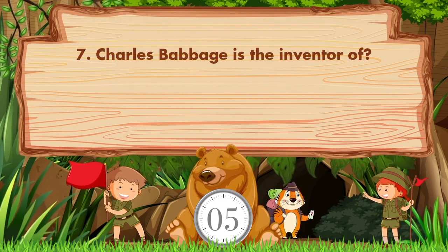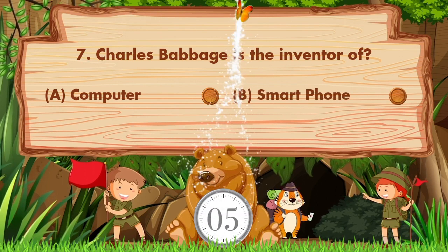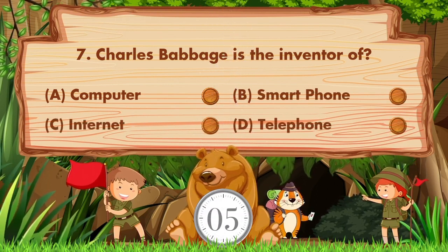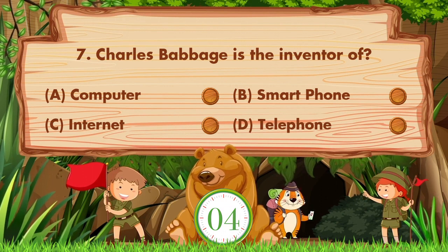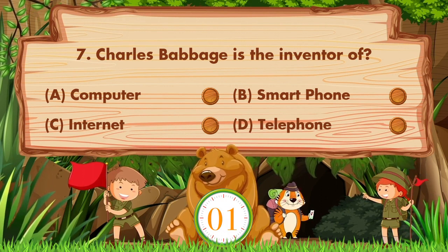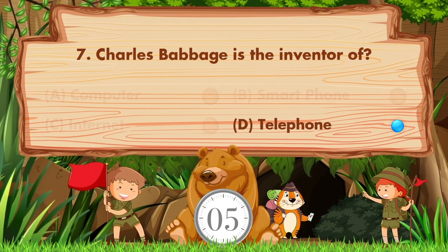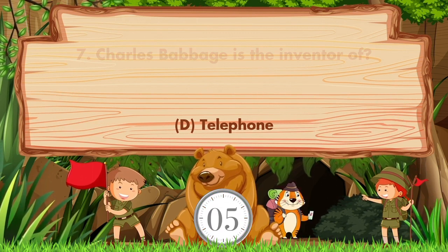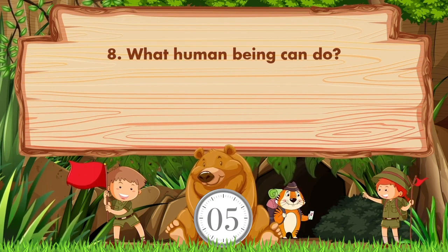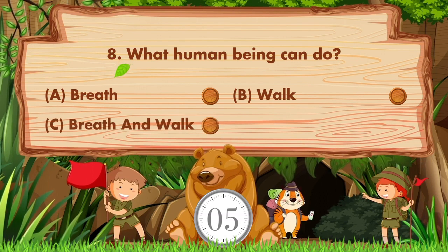Charles Babbage is the inventor of option A: computer, B: smartphone, C: internet, D: telephone. Answer is option D, telephone. What can a human being do? Option A: breathe, B: walk, C: breathe and walk, D: fly.